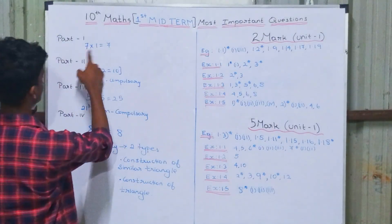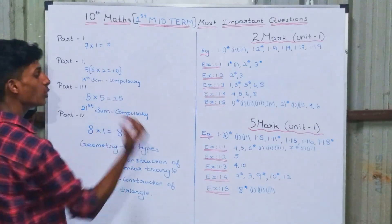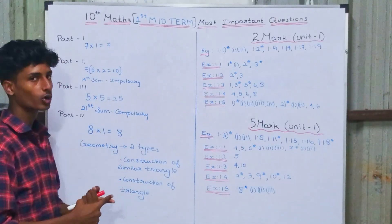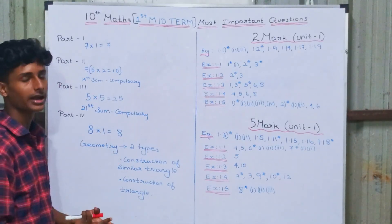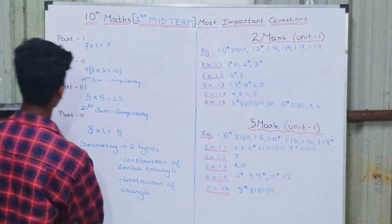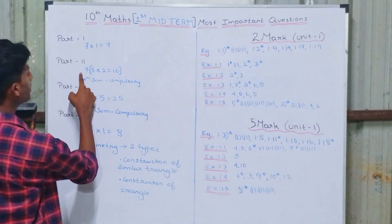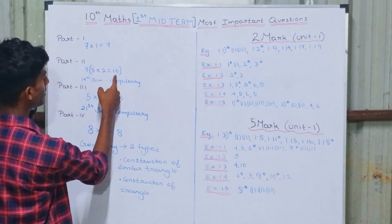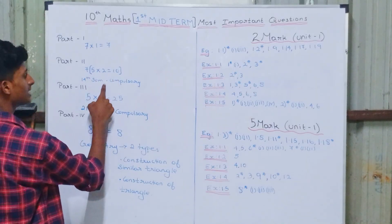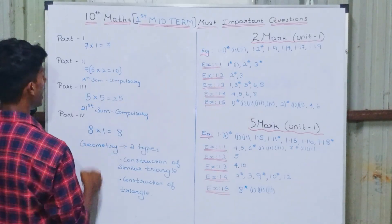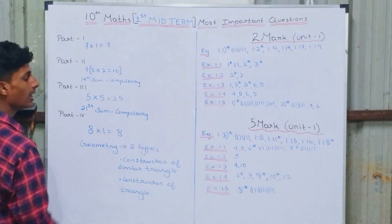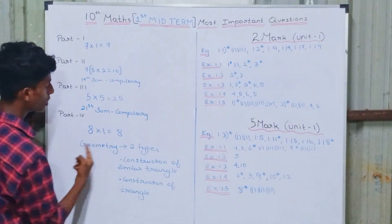If you look at the exam pattern: 7 one-mark questions. If you look at the book back 1-mark, you know the question — write the statement. If you look at the extra marks, 7 two-mark questions. The 14th question is compulsory, and the 5-mark 21st is compulsory. If you look at the 8-mark example, we will talk about geometry.